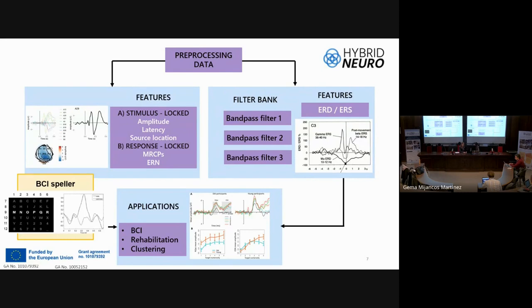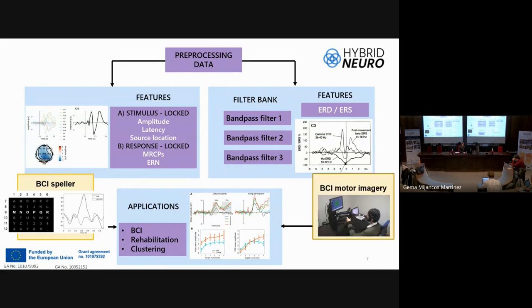Here is an example of a BCI speller that uses the amplitude of these potentials, and a BCI motor imagery system that uses event-related desynchronization and synchronization.